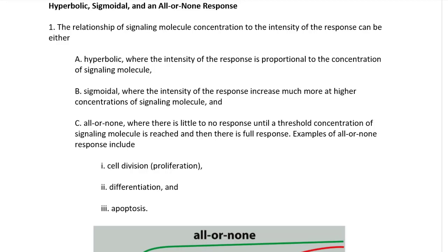Hyperbolic, sigmoidal, and an all-or-none response. The relationship of signaling molecule concentration to the intensity of the response can be either hyperbolic, where the intensity of the response is proportional to the concentration of signaling molecule; sigmoidal, where the intensity of the response increases much more at a higher concentration of signaling molecule; and all-or-none, where there is little to no response until a threshold concentration of signaling molecule is reached, and then there is a full response.